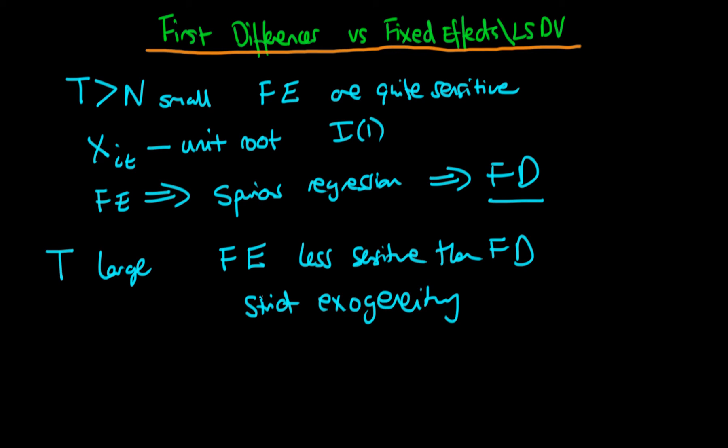So this is the assumption that the idiosyncratic error UIT was uncorrelated with the value of any of the explanatory variables at some other period S, which doesn't necessarily have to be equal to T. It turns out that fixed effects is more robust to violations of this strict exogeneity assumption than first differences.